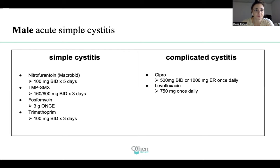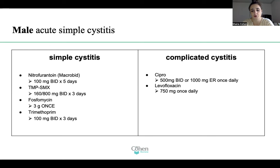For male acute simple cystitis, treatment is very similar to female: nitrofurantoin, Bactrim, fosfomycin, and trimethoprim with similar dosages. It used to be said that male cystitis would always be treated and considered complicated — that's not the case now. If it's simple, you treat it as just described.